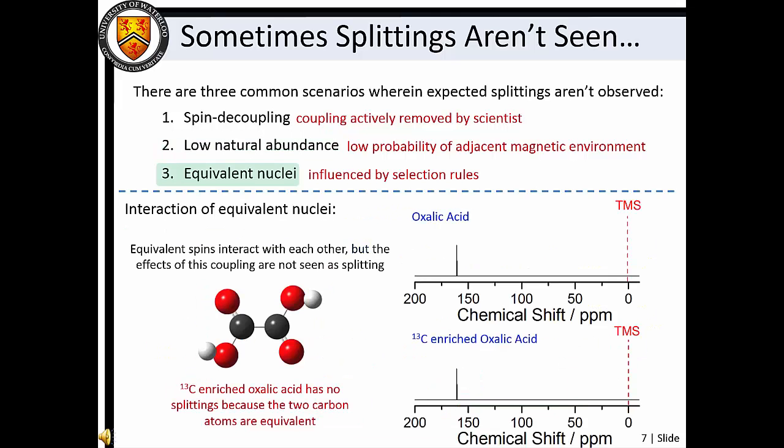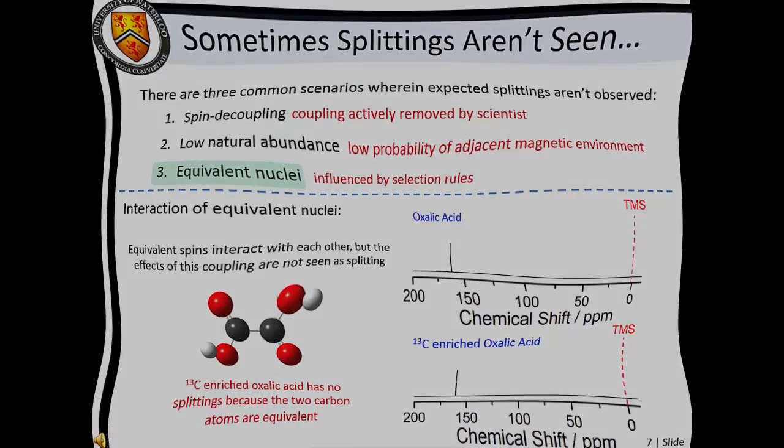Finally, while nuclei that are in the same environment do interact with one another, the interaction does not result in spectral splitting. For example, the adjacent carbon-13 atoms in carbon-13 enriched oxalic acid do not yield a doublet in the carbon-13 NMR spectrum. The reason behind this lies in molecular symmetry and quantum mechanical selection rules.